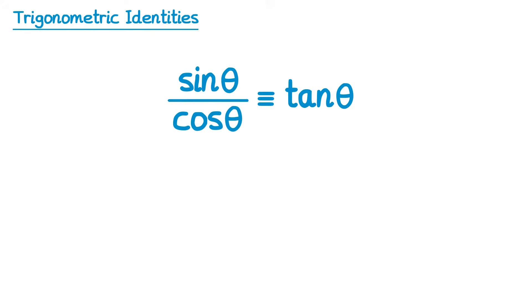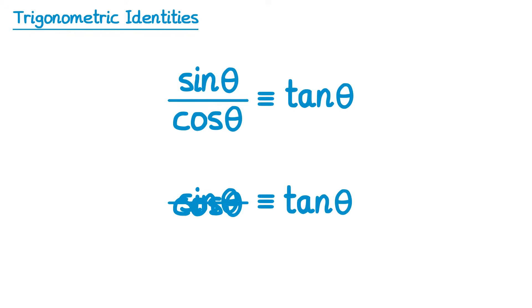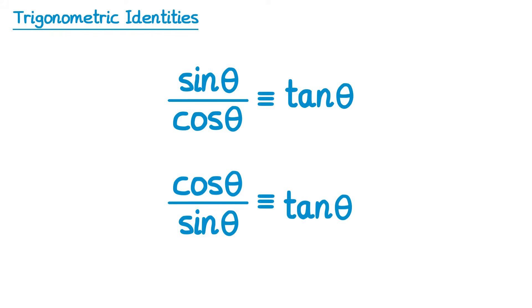Now if you take this identity and do the reciprocal of both sides, that's also true. If you do the reciprocal of the left, you just turn this fraction upside down, and the reciprocal of the right is 1 over tan theta. These two identities often come in handy when solving trigonometric questions.